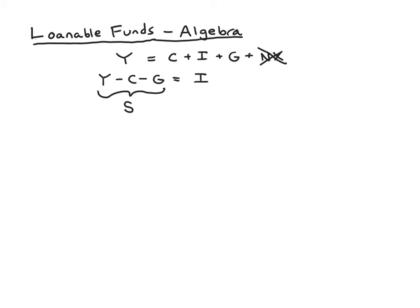This is our loanable funds equilibrium. We can write it as S equals I. In equilibrium, the supply of savings is going to match demand for loans, which is investment. But I think it's helpful to write this slightly differently as S of R equals I of R. So S is a function of the interest rate, I is a function of the interest rate. This helps to reinforce that the point of this equation is to solve for the equilibrium interest rate. We have demand that depends on the interest rate on the right, supply that depends on the interest rate on the left, and then in equilibrium, supply is going to equal demand and we'll have an interest rate that balances the two.